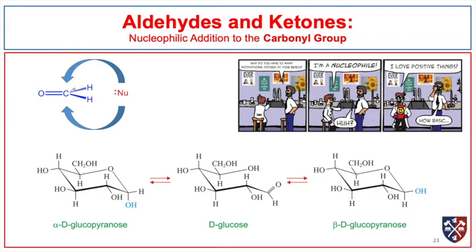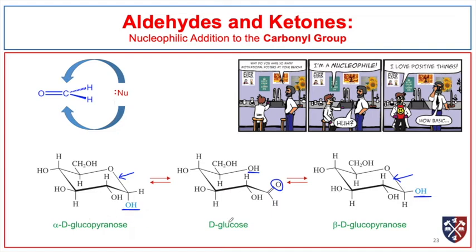The carbonyl carbon is sp2 hybridized, making the carbonyl group trigonal planar. When a nucleophile attacks, it approaches either from above or below that plane, potentially forming chiral centers. For example, glucopyranose can open to its aldehyde form. A hydroxyl group can then attack the aldehyde carbon from the same side to regenerate alpha-D-glucopyranose, or from the opposite side to give beta-D-glucopyranose. The carbonyl oxygen in the aldehyde form thus has opposite stereochemistry between alpha-D-glucopyranose and beta-D-glucopyranose.